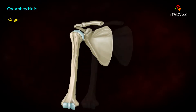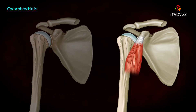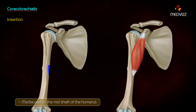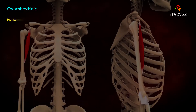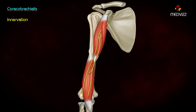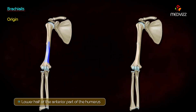Coracobrachialis originates at the lateral part of the coracoid process of the scapula, as a common tendon along with the biceps brachii. It is inserted at the medial part of the mid shaft of the humerus. Its actions are adduction and weak flexion of the shoulder. It is innervated by the musculocutaneous nerve.